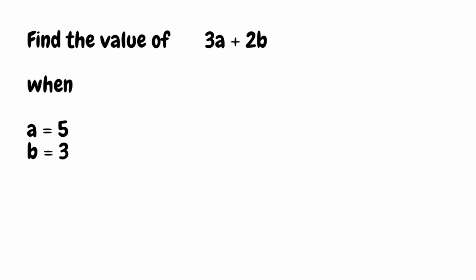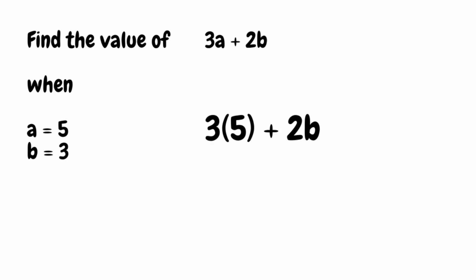When we substitute, all we need to do is swap. I'm going to swap that a for 5 and swap that term of b for 3. When we're substituting and we've got a multiplication involved, like this 3 times a and 2 times b, it can be handy to put the number we're substituting in a bracket. So starting with the expression 3a plus 2b, I'm going to swap the a for a 5 in a bracket, and then do the same for b, swapping b for 3 in a bracket as well.